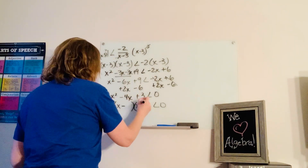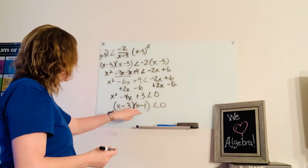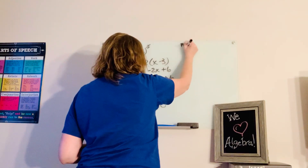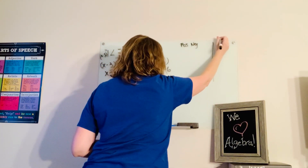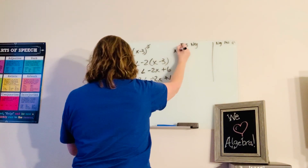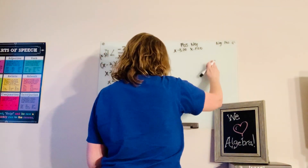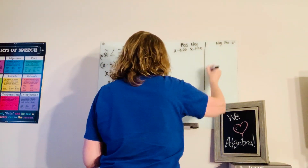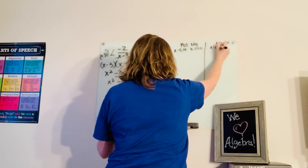The practice problem says: 1 is less than negative 2 over the quantity x minus 3. This is where it begins to get interesting. We have not before had our variable in the denominator with an inequality. I know that in your mind you're thinking, why can't I just multiply both sides by x minus 3 to get my variable out of the denominator?